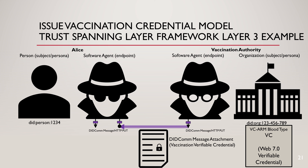Here's a second example, almost virtually identical. We have a vaccination authority and Alice as the actors. A vaccination verifiable credential is sent from the vaccination authority to Alice. The vaccination authority acts as a verifiable credential sender, and Alice acts as a verifiable credential receiver. The blood type here is the same — VC, verifiable credential.